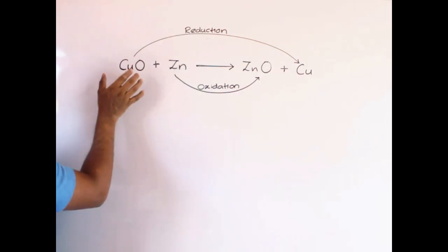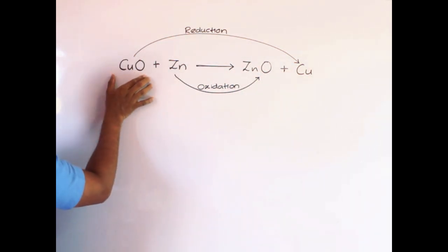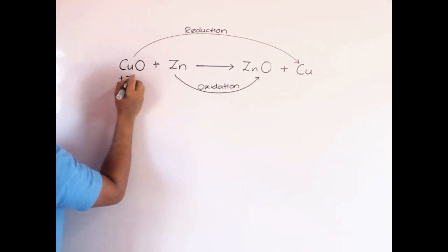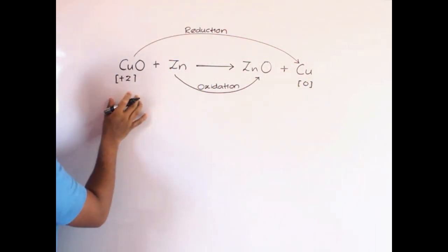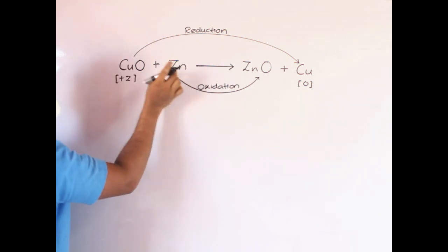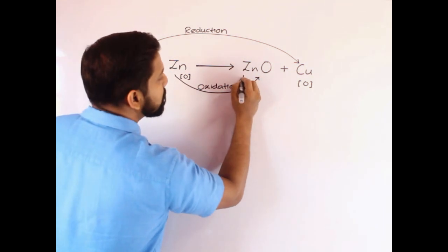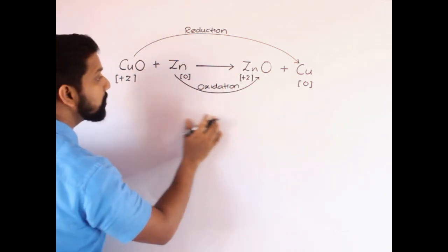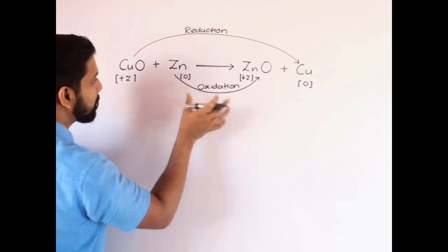Here we have copper oxide reacting with zinc, giving zinc oxide and copper. Copper oxide has lost oxygen, therefore it has undergone reduction. The oxidation number of copper goes from +2 to zero, so the oxidation number has reduced. The Cu²⁺ ion has accepted two electrons from zinc to become zero. Zinc is zero on the reactant side and +2 on the product side — it has gained oxygen, its oxidation number has increased, so it is oxidation.